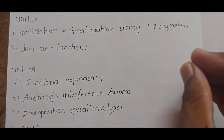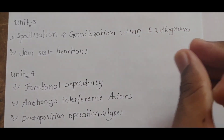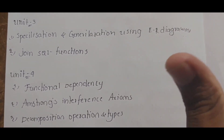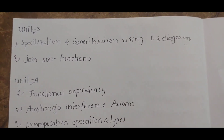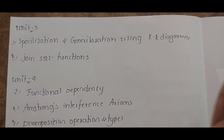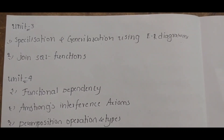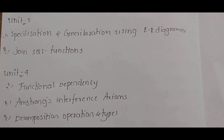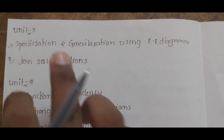For Unit 4 — functional dependency, Armstrong's inference axioms, and decomposition operations and types are important. You want to scan all of these. If you have any doubts, you can contact me via the description.